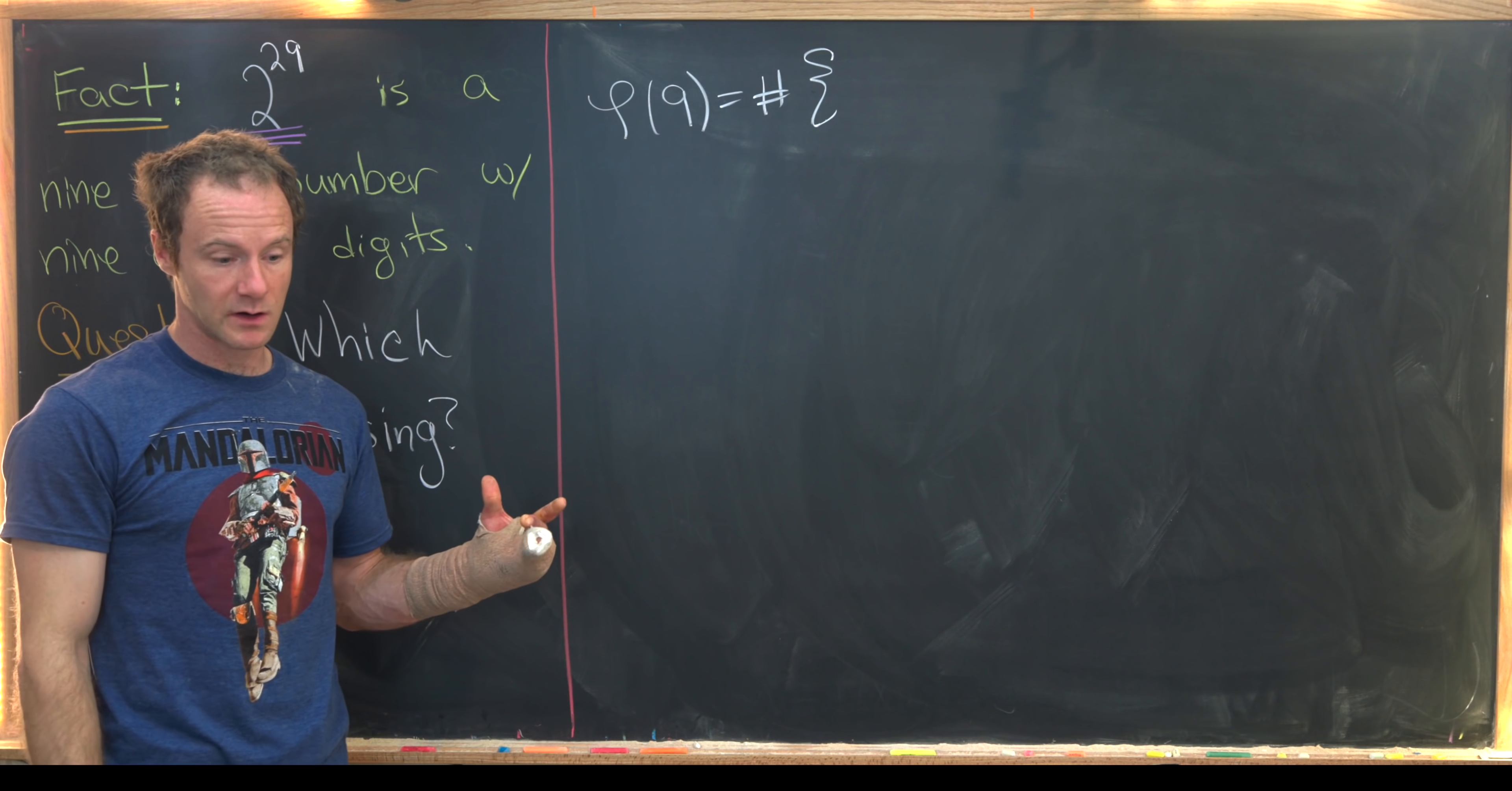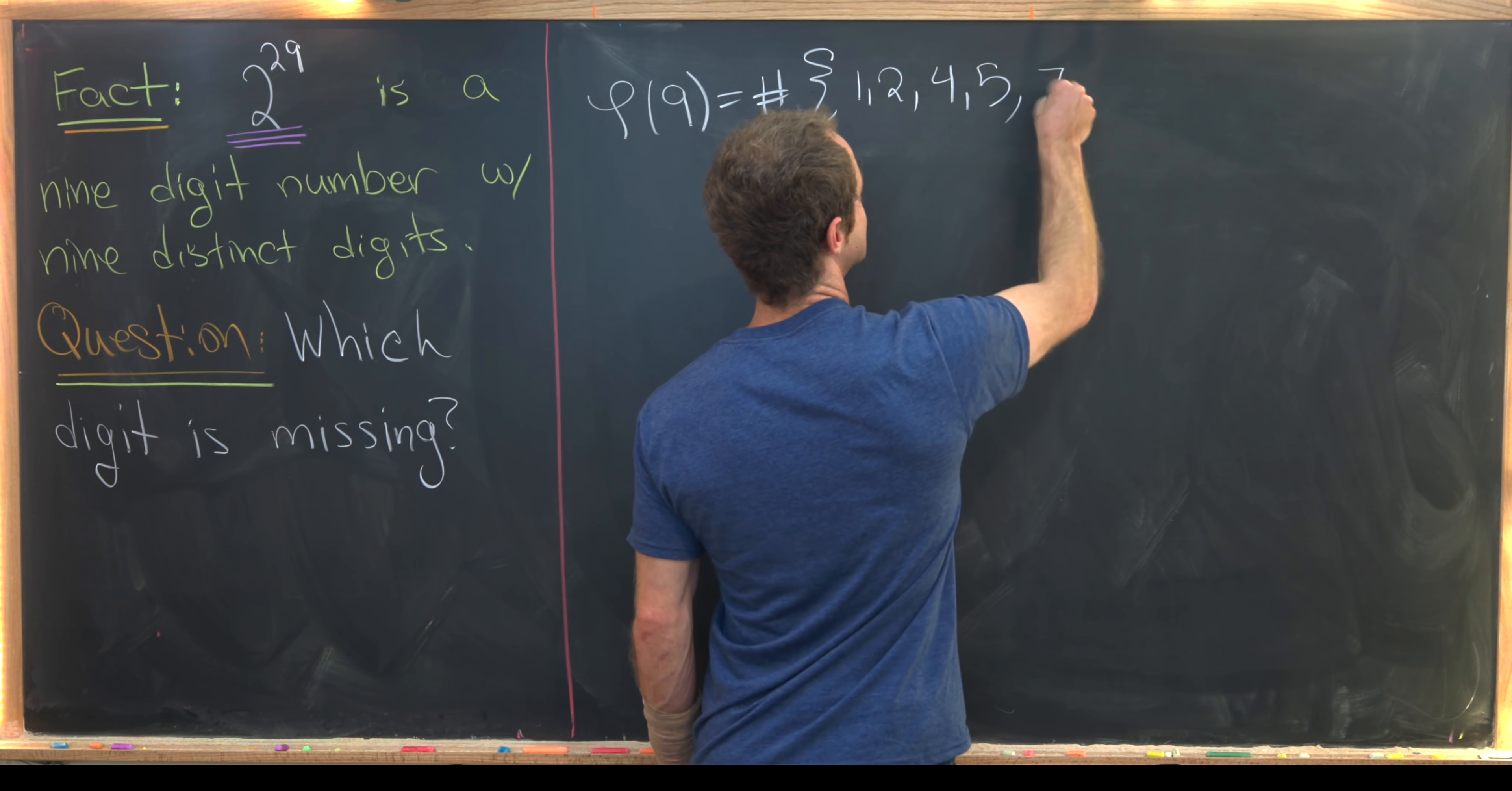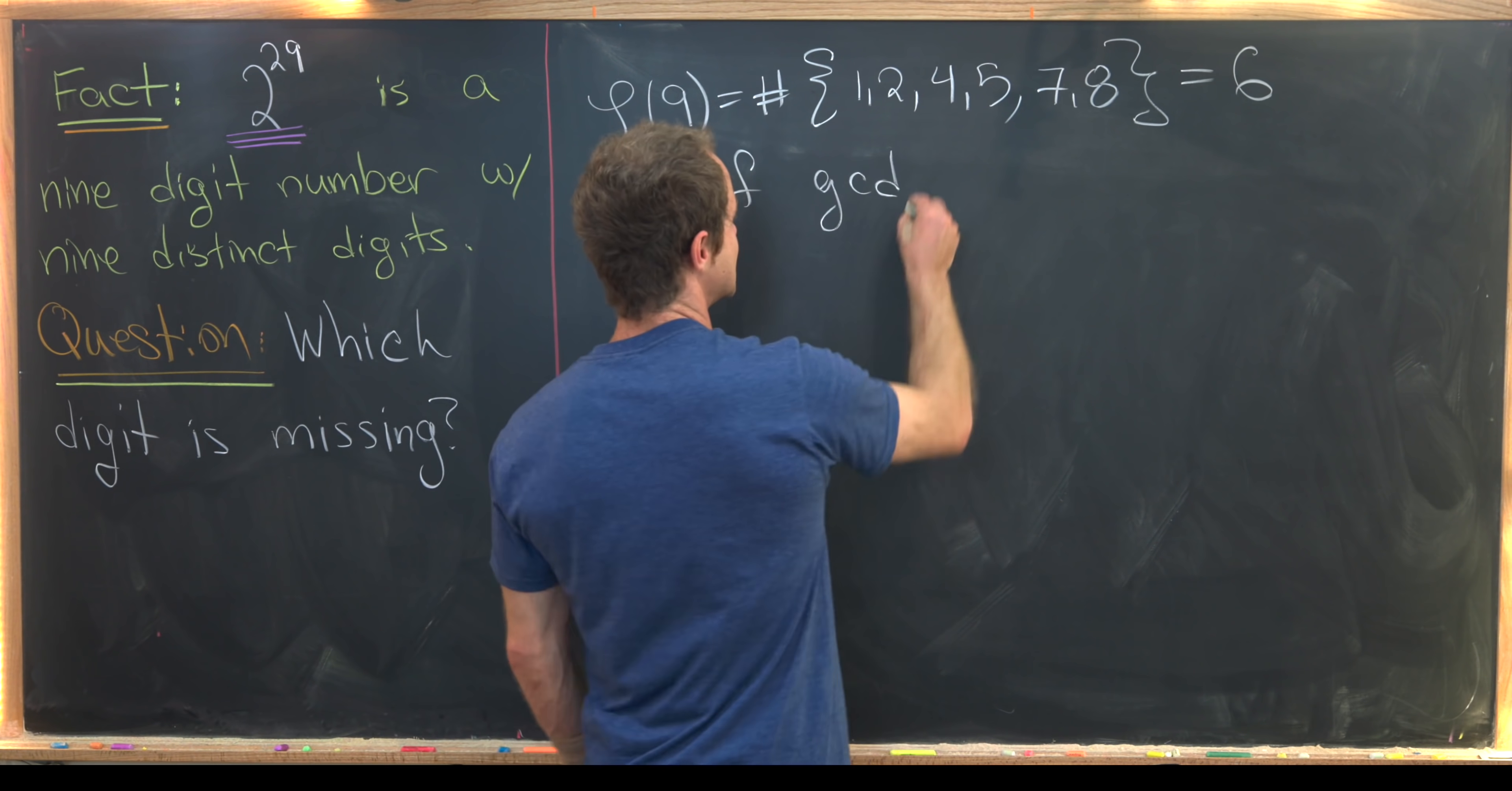Well, let's recall that that's going to be the number of natural numbers between one and nine that are relatively prime to nine. So we've got one, two, three is not relatively prime to nine because it's a divisor of nine, and then we have four, five, we have to skip six, we have seven and eight. And so in total we have six numbers in that set, which means Euler's totient function evaluated at nine is equal to six.